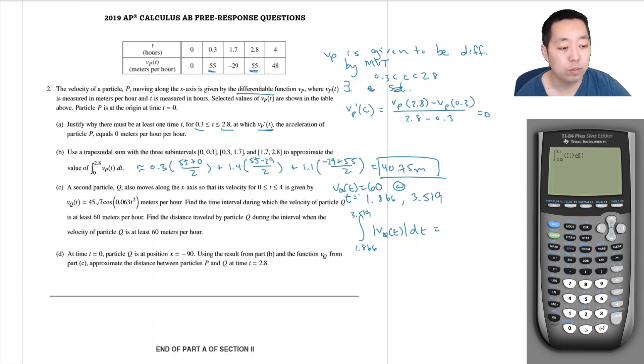To do math 9, integral from 1.866 to 3.519, integral of vars - I think I used y4 - and dx. I got 106.1 meters.